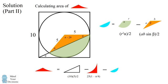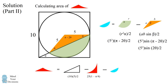We can substitute these dimensions into our formulas. We can simplify using the identity that sine of (pi minus 2 theta) equals sine of 2 theta. Now we need to find angle theta. In our original triangle, it has a height of 5 and a base of 10, so theta equals the inverse tangent of 5 over 10, which is the inverse tangent of 1/2.